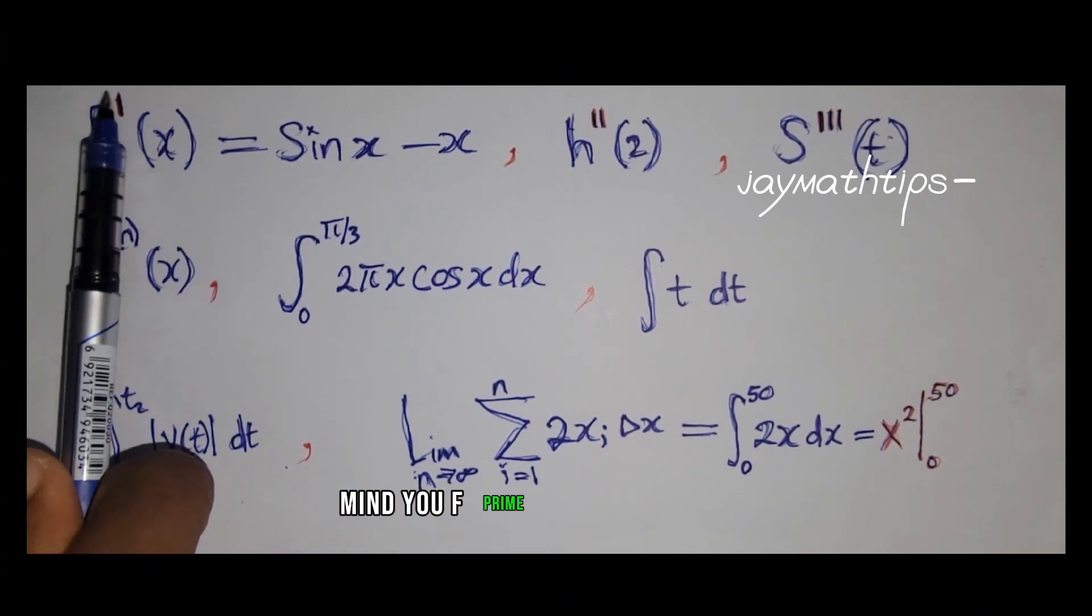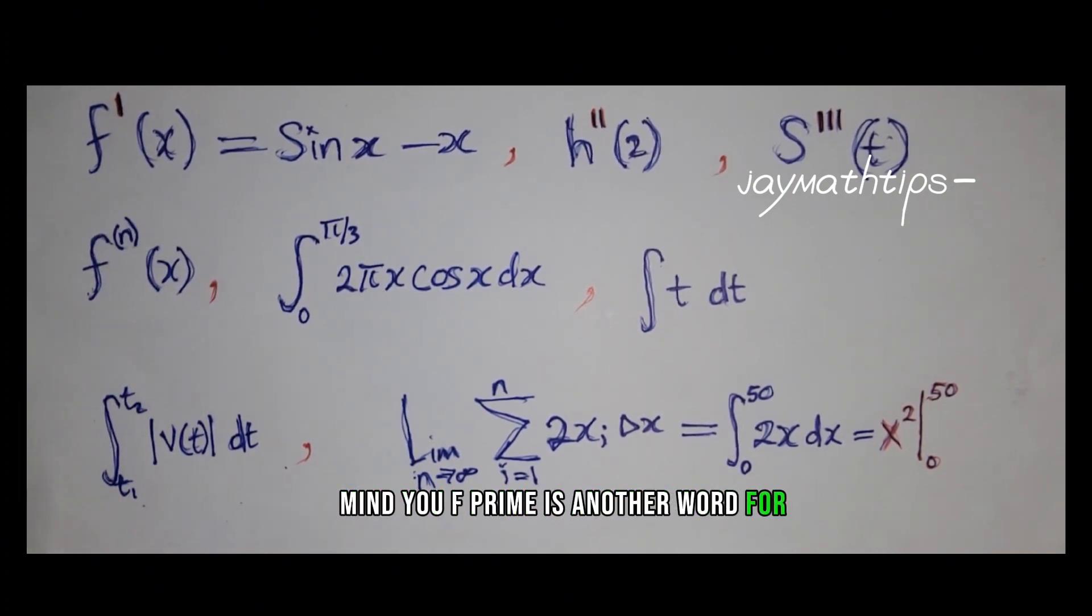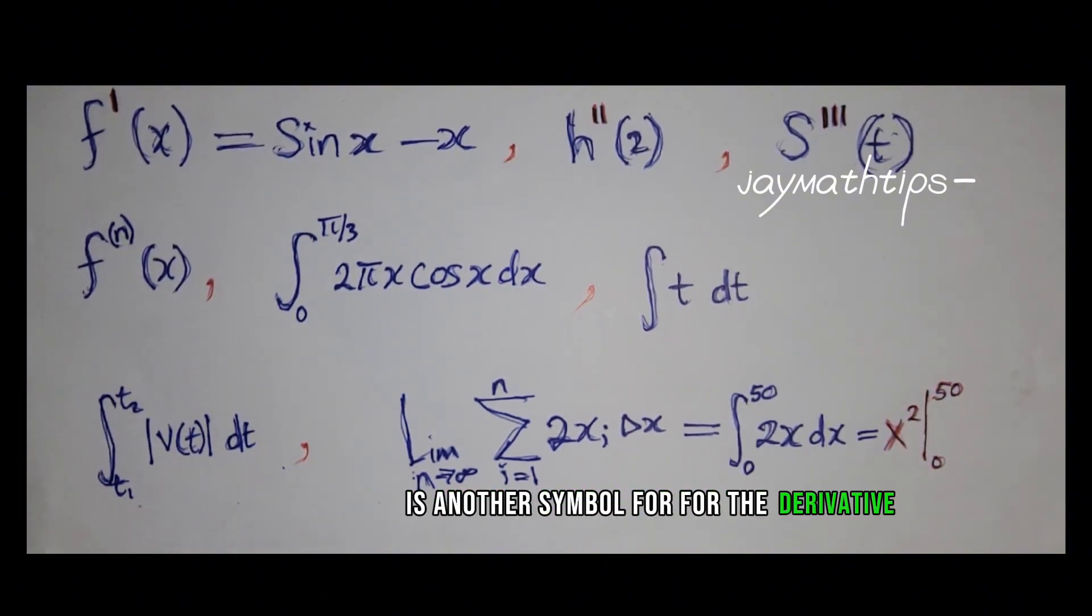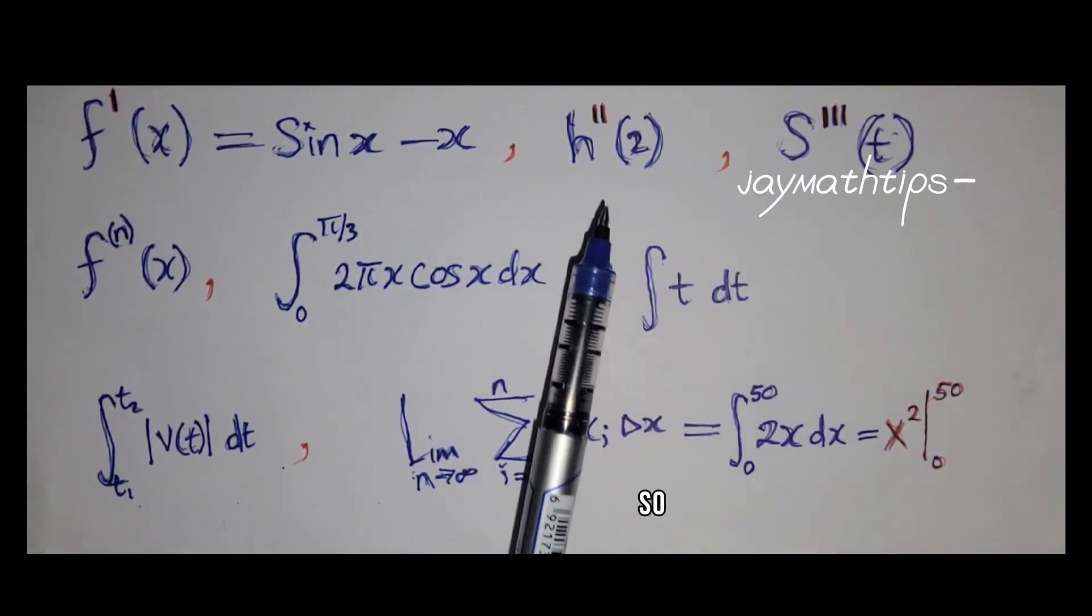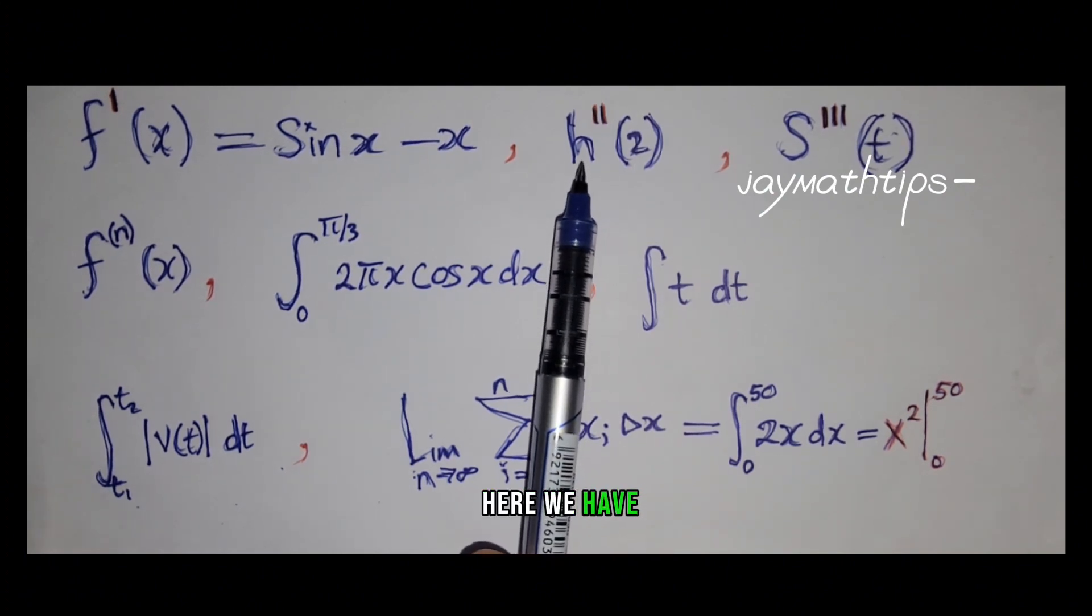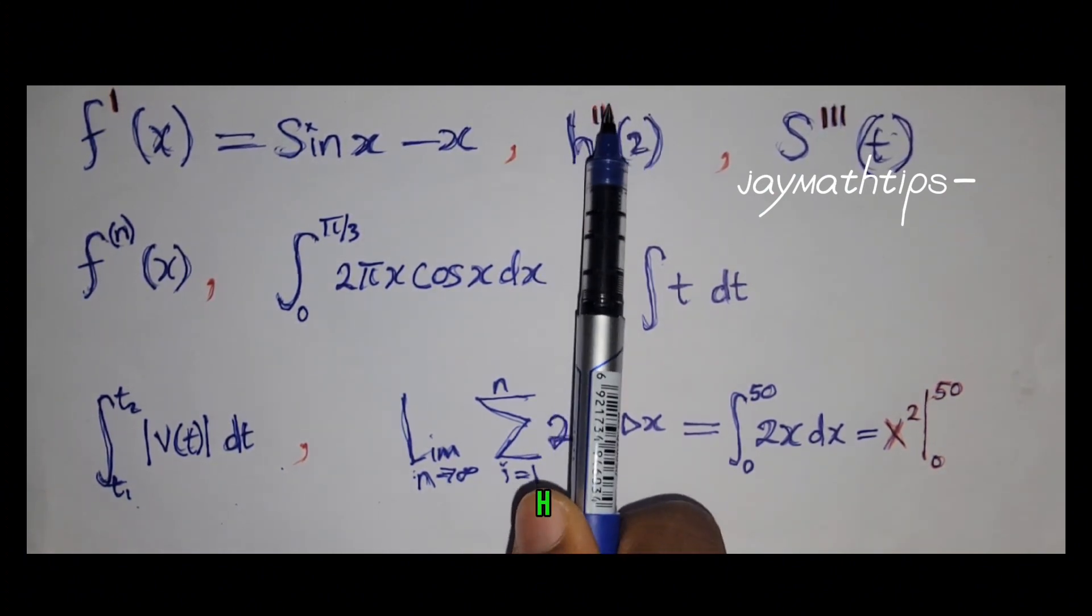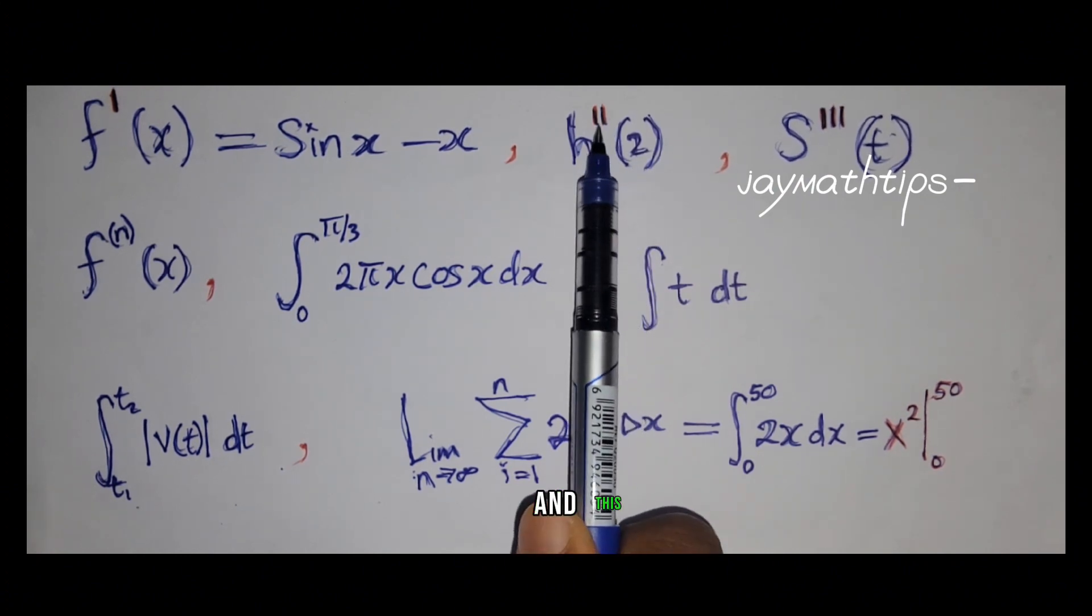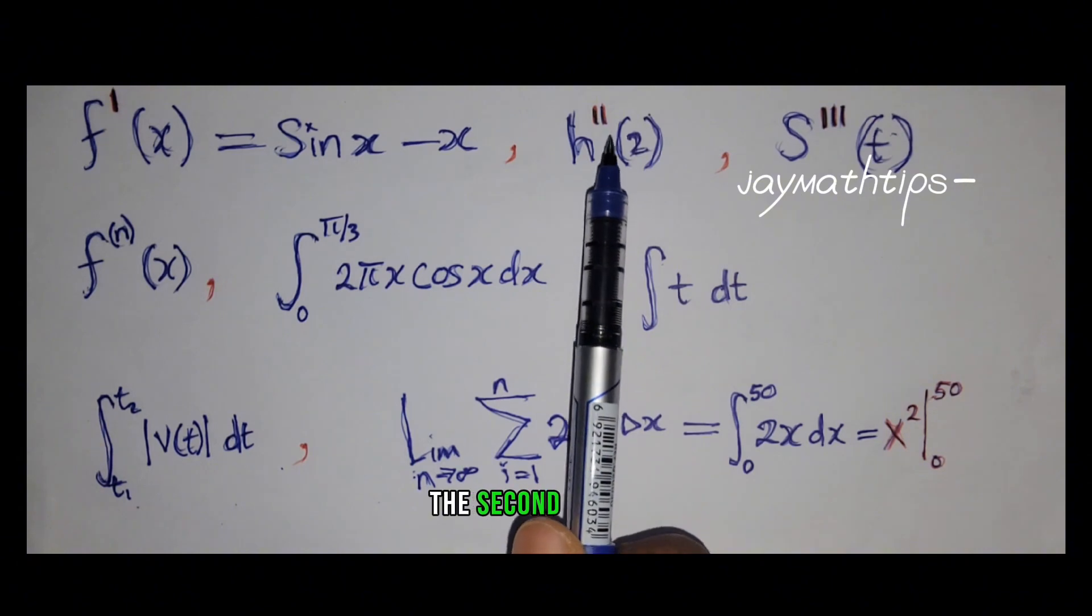Mind you, f prime here is another word for derivative. It's another symbol for the derivative. So here we have h double prime of 2, and this one here is the second derivative evaluated at 2.